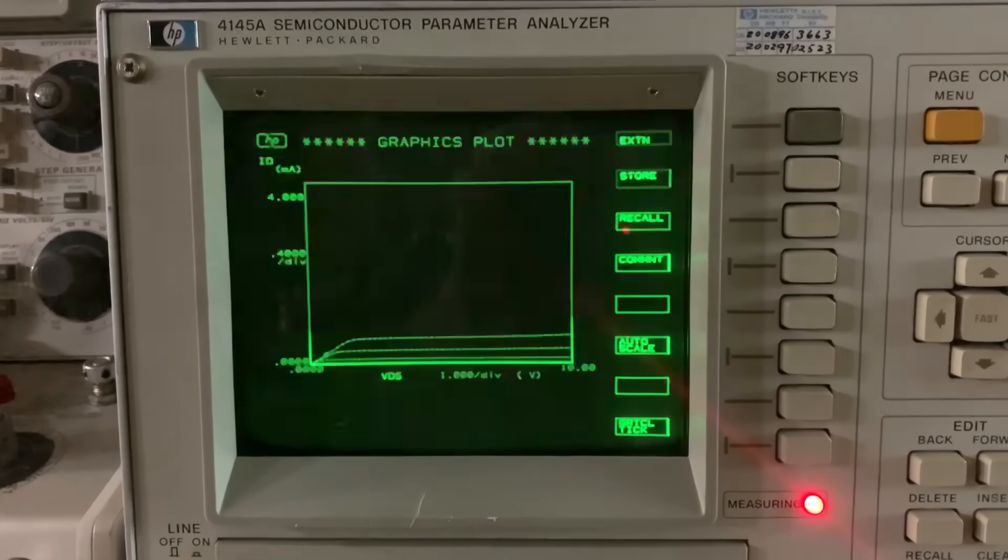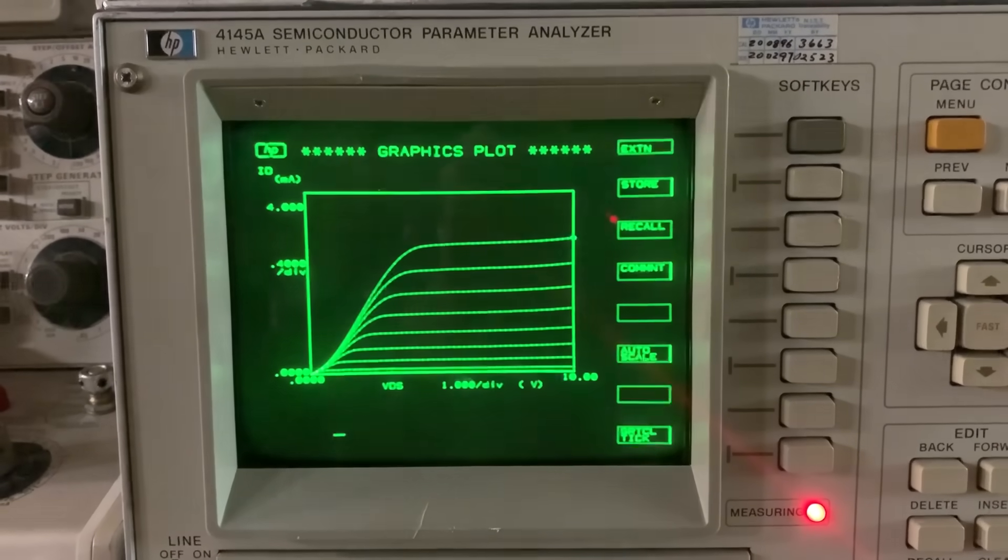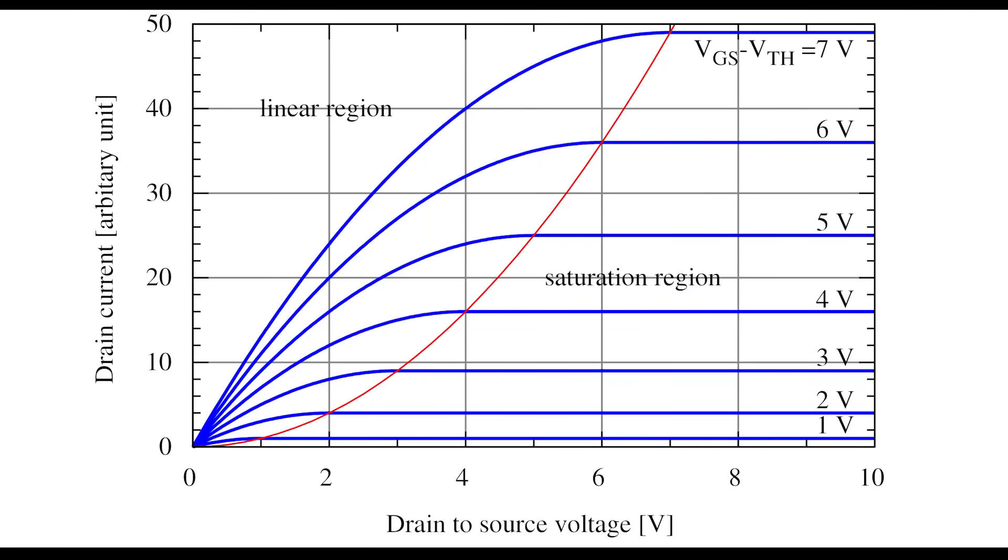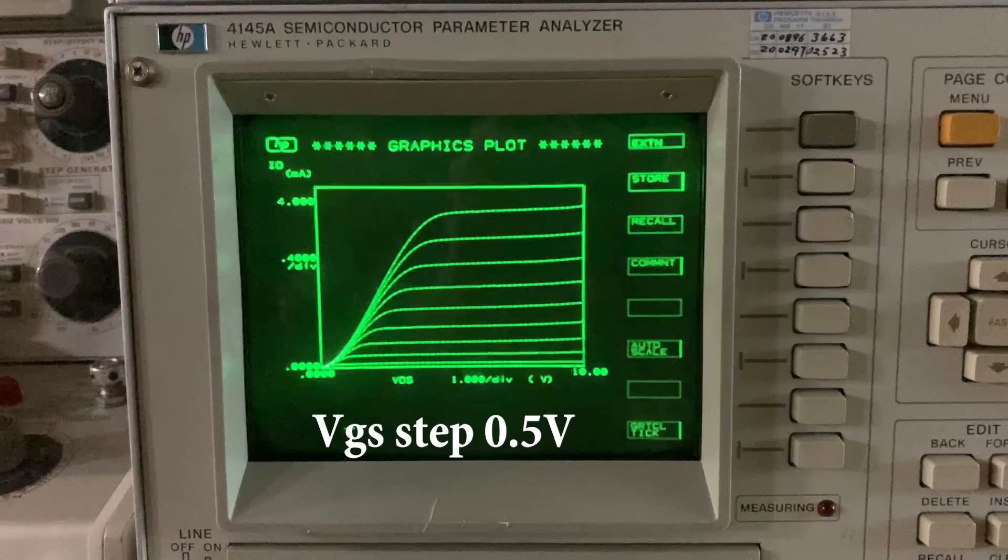So this is the ID versus VDS curve of an N-channel MOSFET. Here's an ideal one taken off of the internet, and then here's the one that I'm getting from my FETs, and they look great.